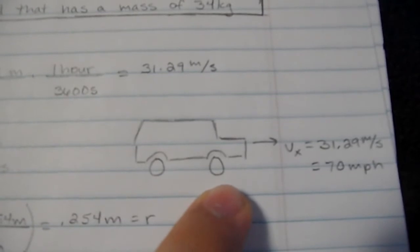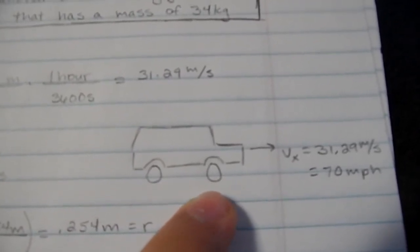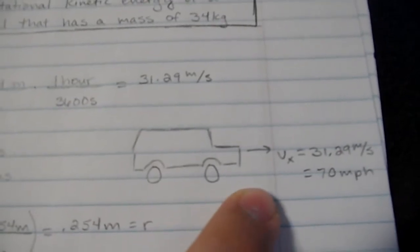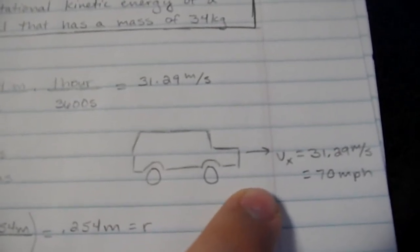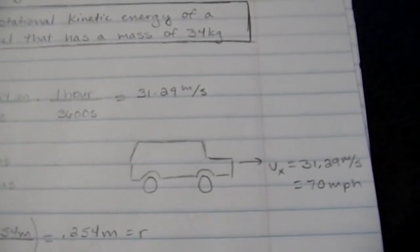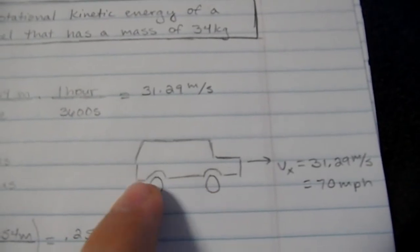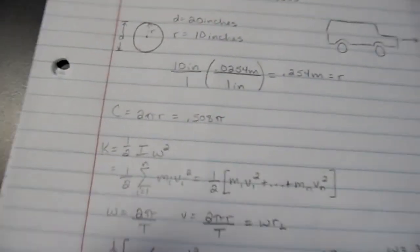Basically, the other forces are canceling out. The jeep is not sinking into the ground. It's not blowing up. And of course, we're neglecting air resistance or anything else that would further complicate this problem other than just finding the rotational energy of one of these wheels. All right, let's get into the fun stuff.